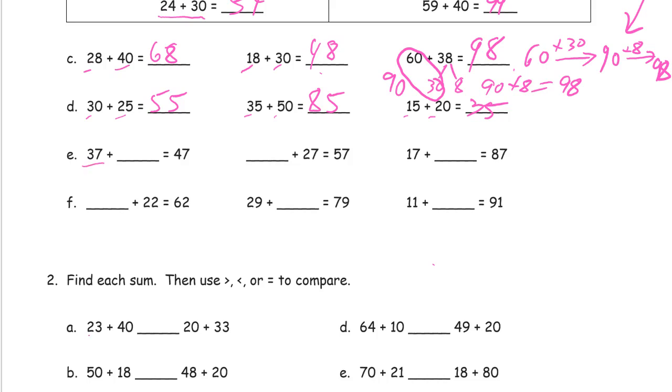Now 37, what do we need to add to it to get 47? We have all the ones we need, we just need another 10. 27 and 57, we just need 10s. We have 2 tens, we need 5, so we need 3 more, 30. 17 and 87, we have all the ones we need already, so we have to get from 1 ten to 8 tens, we need 7 more tens, and that's just 70.